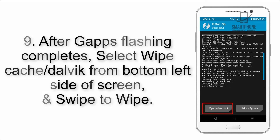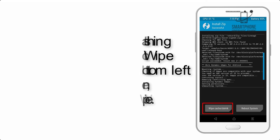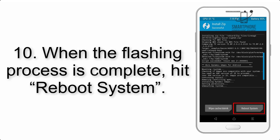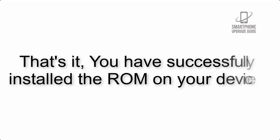Step 8: Flash the GApps zip package in the same manner. Step 9: After GApps flashing completes, select Wipe Cache and Dalvik from the bottom left side of the screen and swipe to wipe. Step 10: When the flashing process is complete, hit Reboot System. That's it — you have successfully installed the ROM on your device.